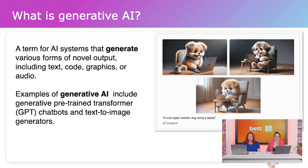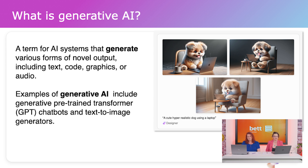Generative AI, on the other hand, is different because it creates new content from patterns of data, and that can include text, code, graphics, or even audio. Examples of that would be something like the general pre-trained transformer, or GPT, which we've all heard of, chatbots, and text-to-image generators such as Microsoft Designer.